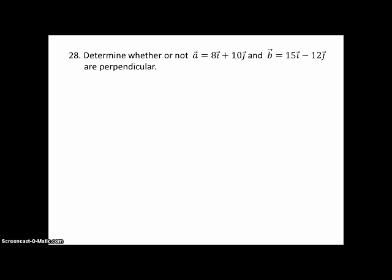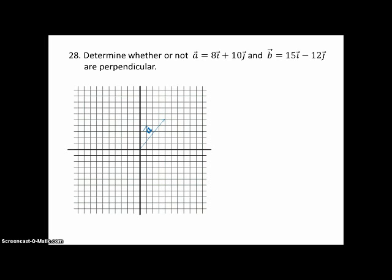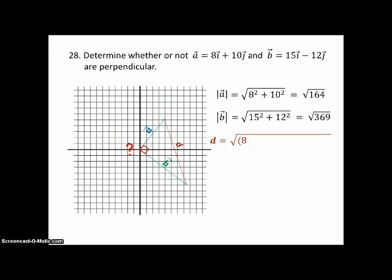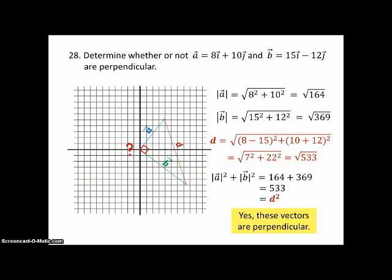Number 28. Determine whether or not vectors a and b are perpendicular. Now later, we're going to have a shortcut for this. But for now, we have to do it the long way. So there's a and there's b. And the question is, is that forming a right triangle? Because if they're perpendicular, then this would be a right triangle. So we'll find the length of a and we'll find the length of b. And then we'll use the distance formula to find the length of the hypotenuse. So we're subtracting the x values, a.k.a. the numbers in front of the i's. And then we're subtracting the y values, a.k.a. the numbers in front of j. Squaring those. And sure enough, if I square the legs and add them together, I do get the square of the hypotenuse. And therefore, this is a right triangle. And therefore, yes, these vectors are perpendicular.